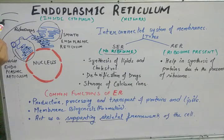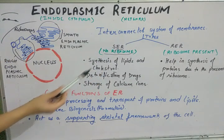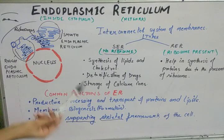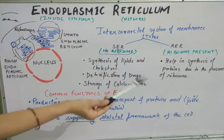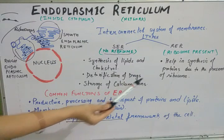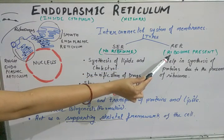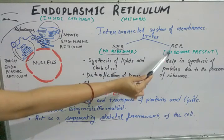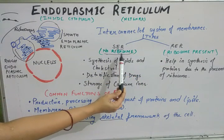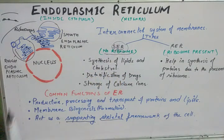The one bearing ribosomes appears rough. Due to the presence of ribosomes it is called rough endoplasmic reticulum — 'R' for rough and 'R' for ribosome. Rough endoplasmic reticulum is the one having ribosomes on its surface. When there are no ribosomes on the surface it appears smooth, so that is smooth endoplasmic reticulum.